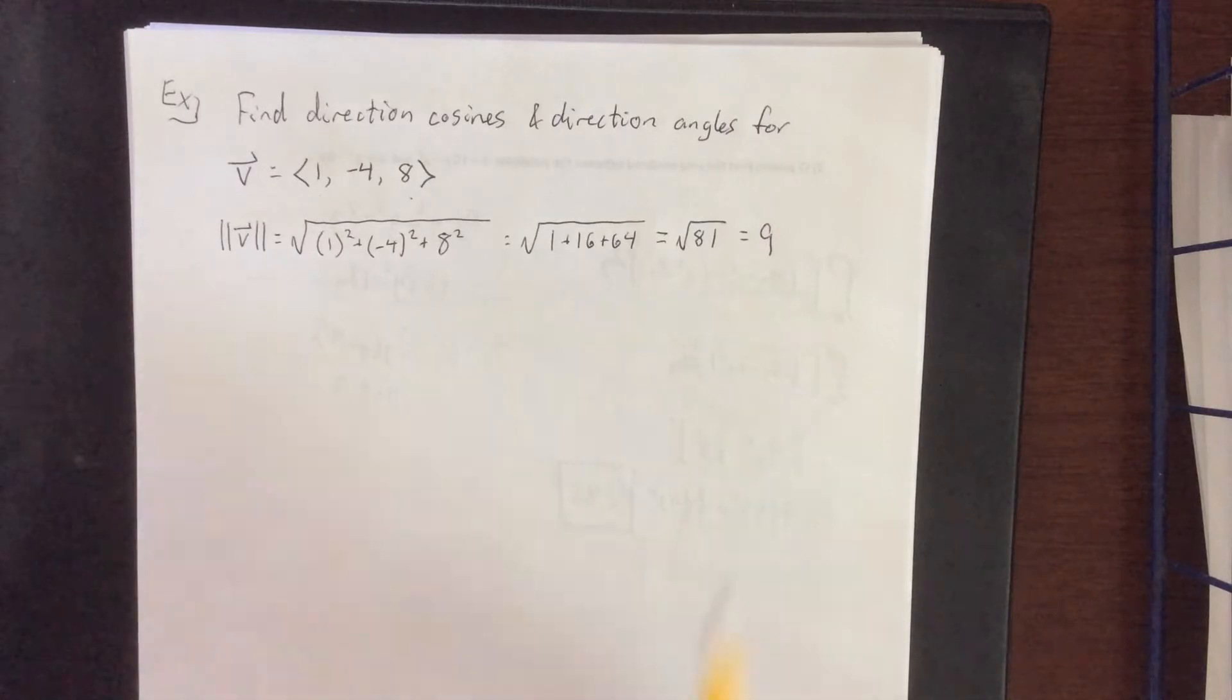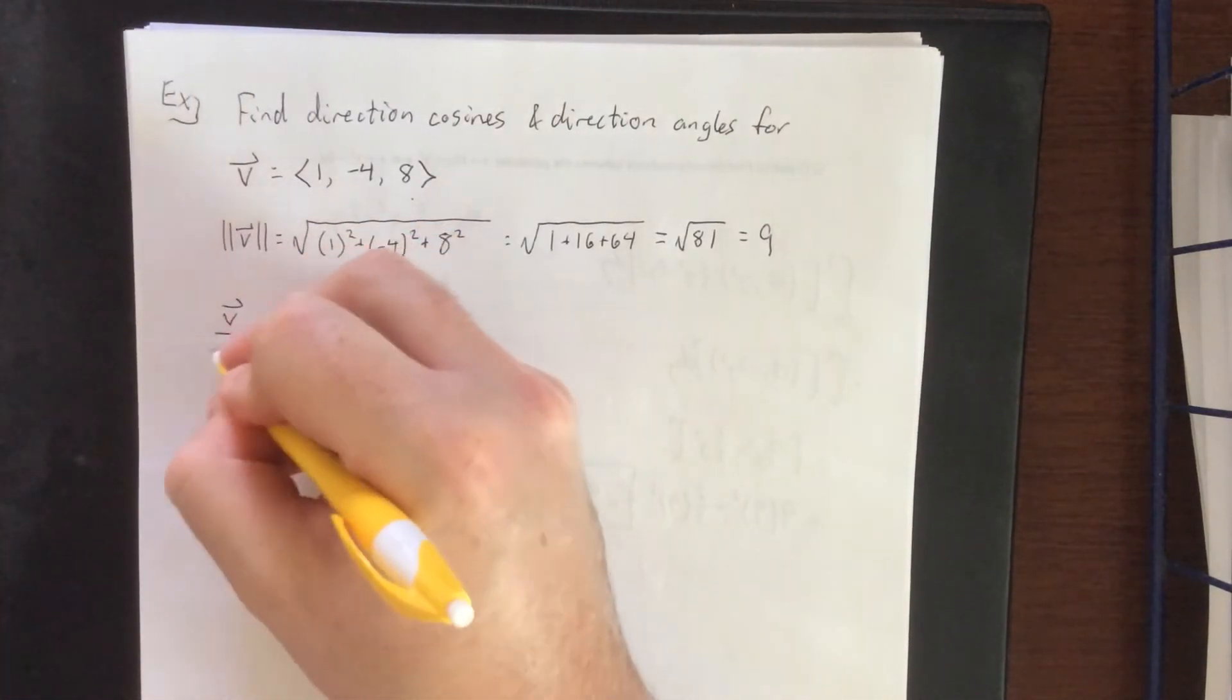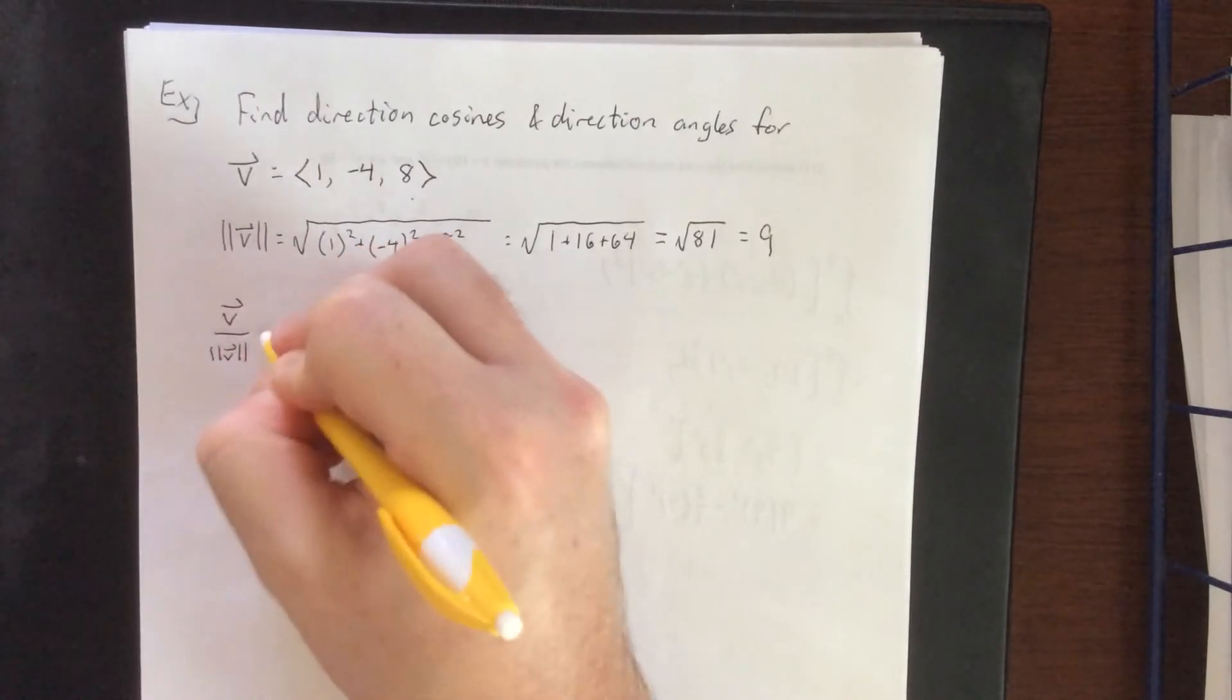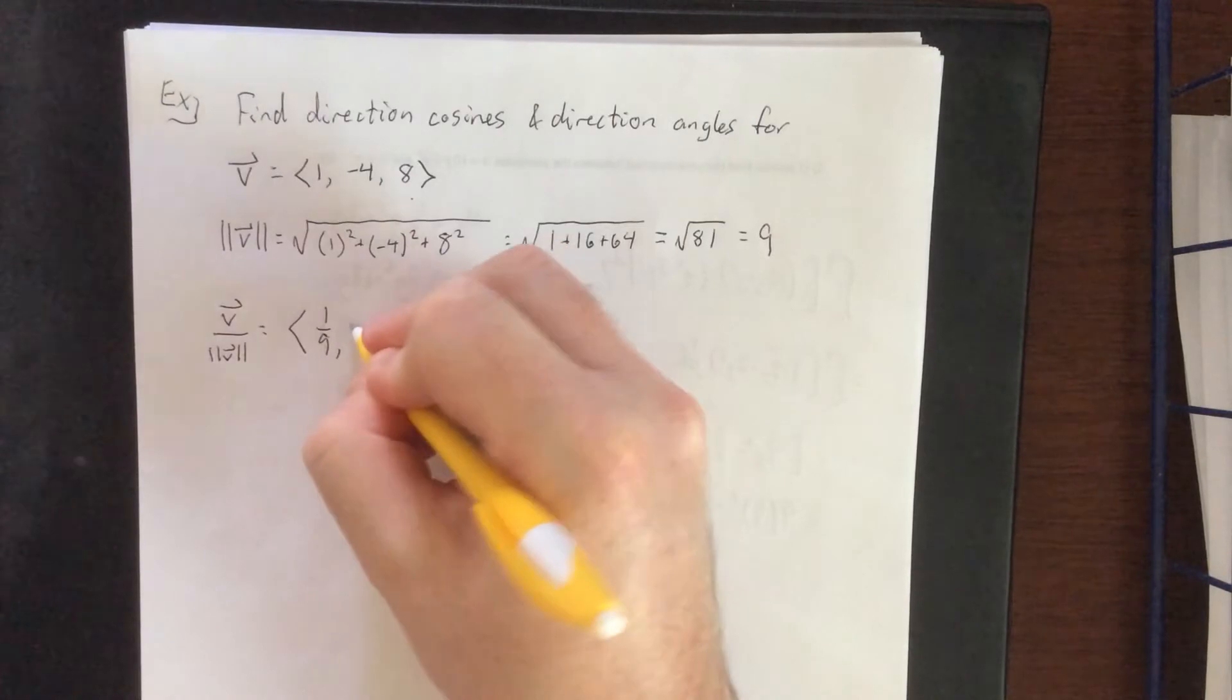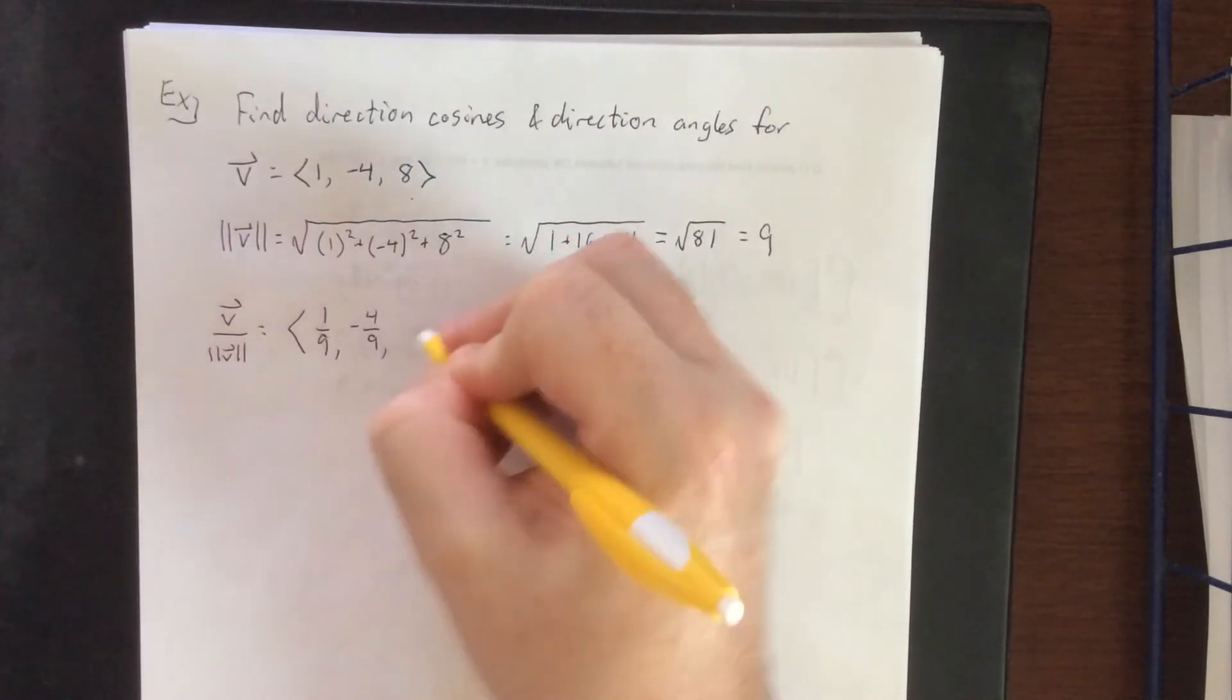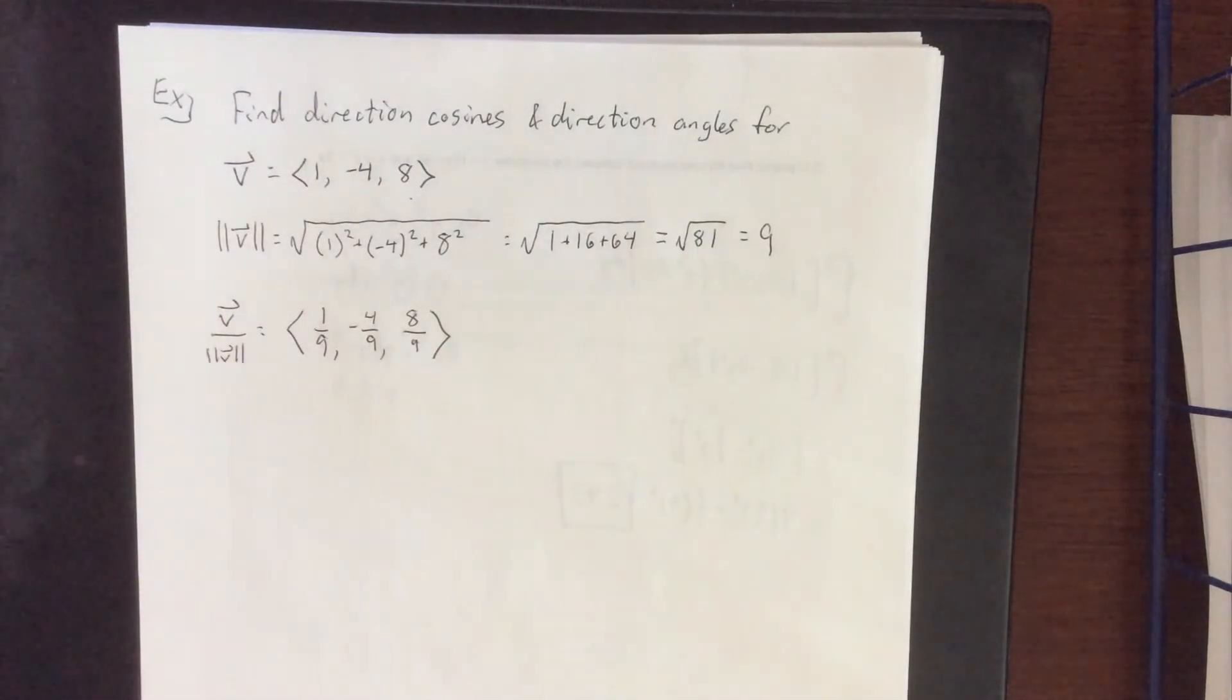The first thing we get out of this is the unit vector pointed in the appropriate direction, which would be the vector (1/9, -4/9, 8/9) by dividing our vector by the given magnitude. This is a unit vector.